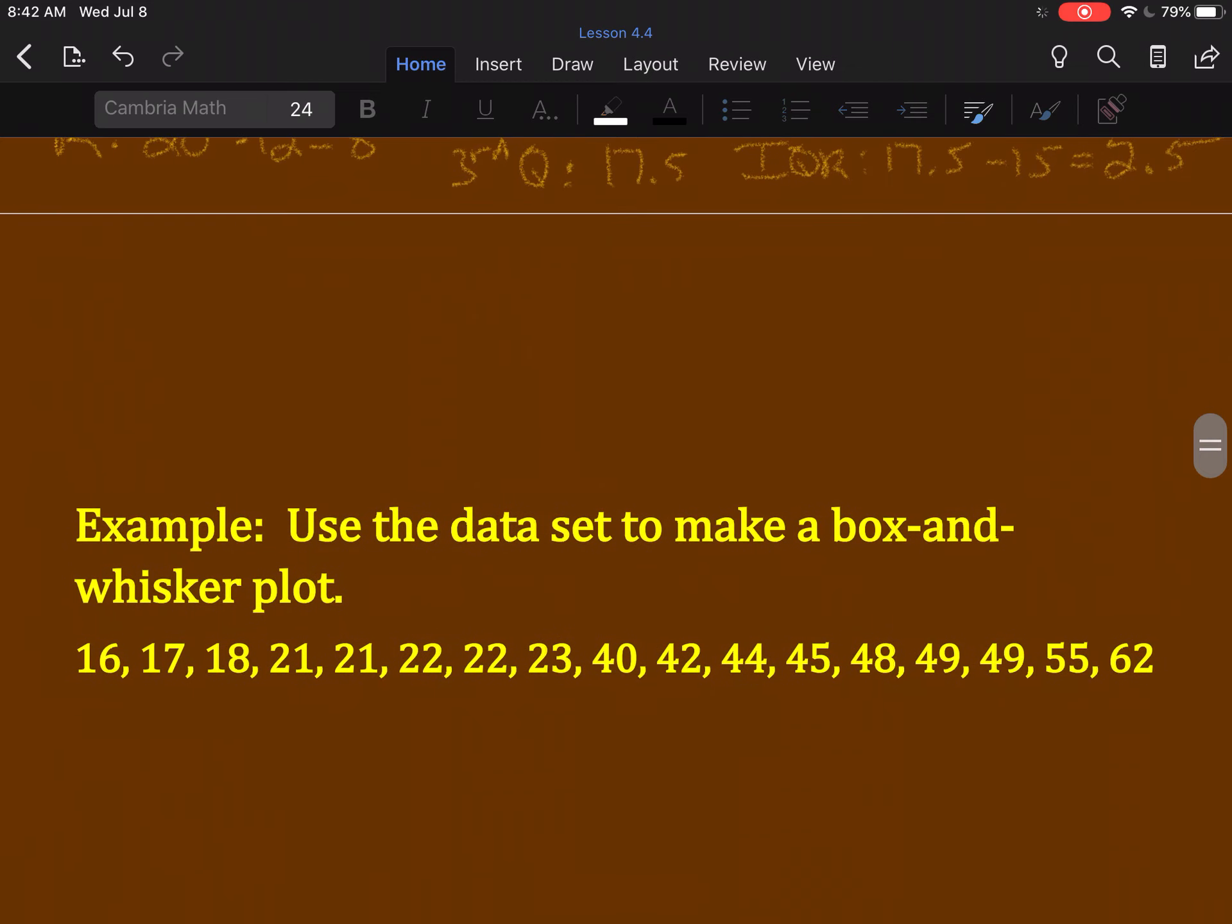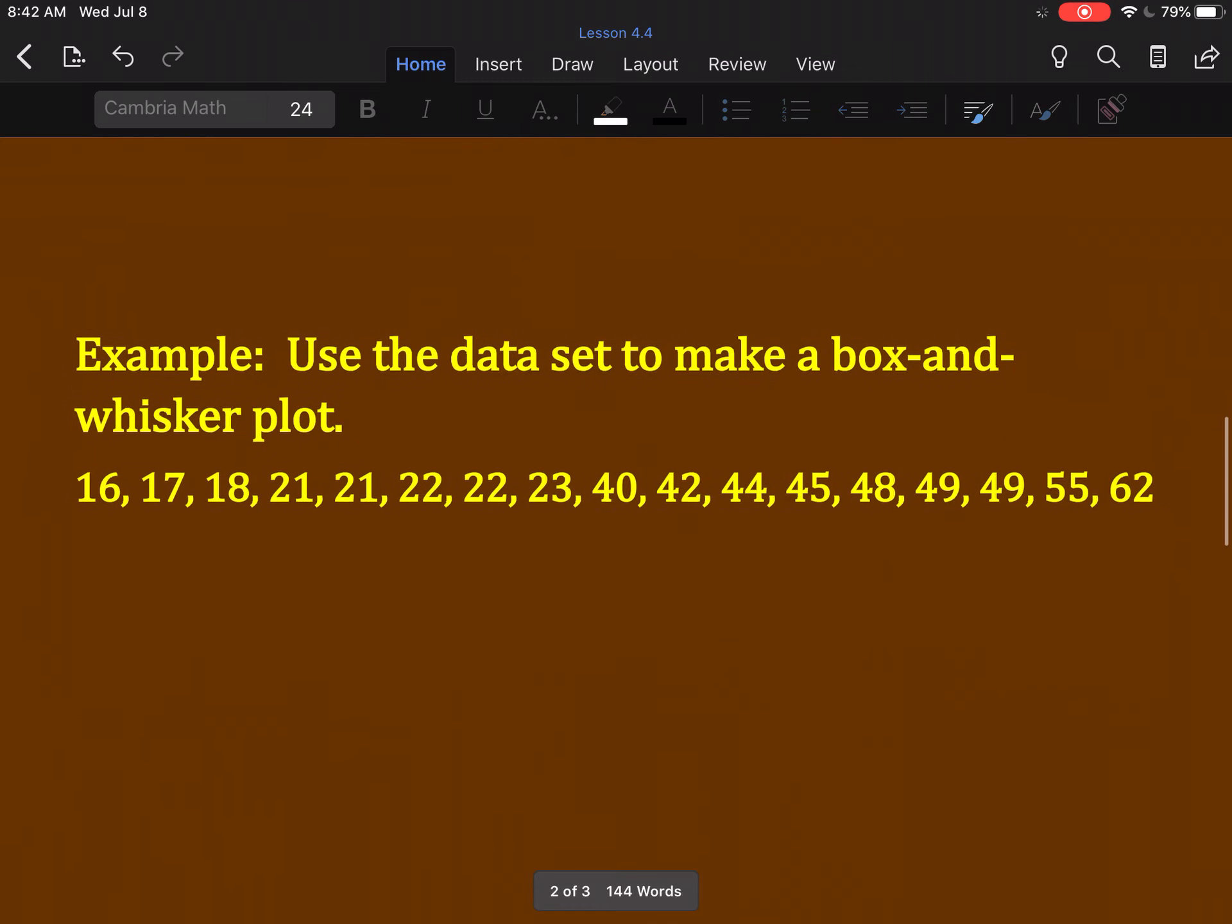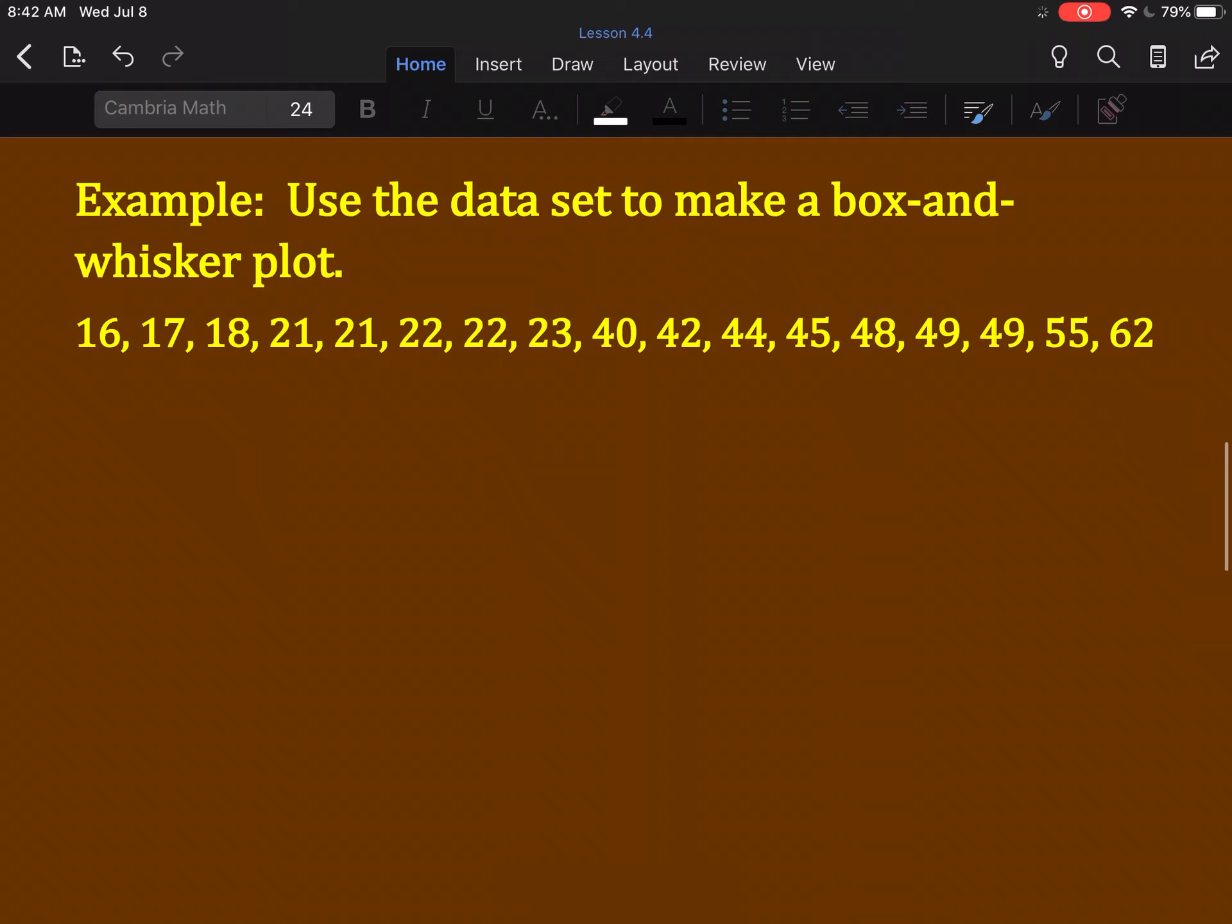And last, use this data set to make a box and whisker plot. So I already put this data set in order. What we need to do is figure out the low number, the high number, the median, the first, and the third quartiles. So, two of those things we already know. There's our high and our low.